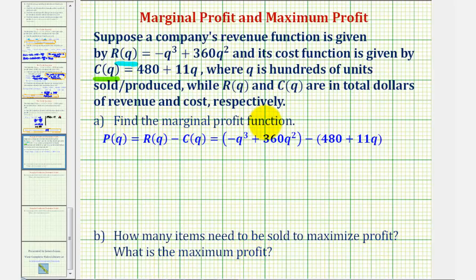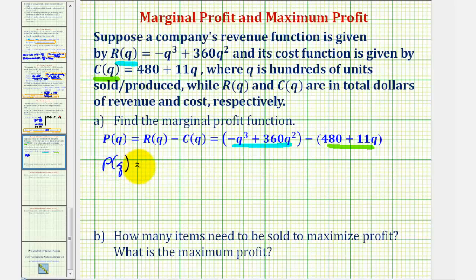Before we find the marginal profit, we need to find the profit function, where profit is equal to revenue minus cost. So notice how here we have the revenue function minus the cost function. Simplifying, p of q is equal to negative q cubed plus 360q squared minus 11q minus 480.